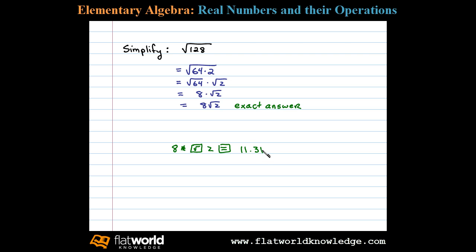Now to round this off to the nearest hundredth, we would look to the place to the right of that, and here we see a three, so we're going to round down. This is approximately equal to 11.31, and that's our approximate answer.